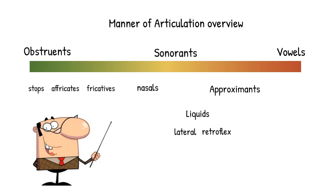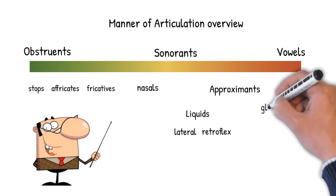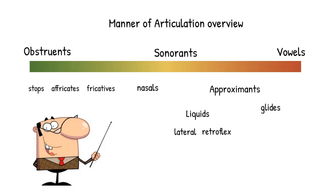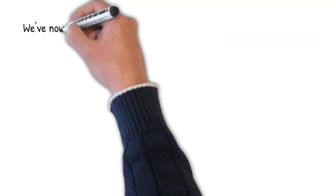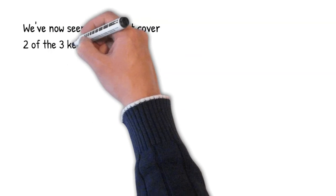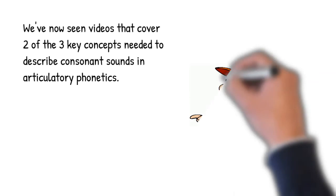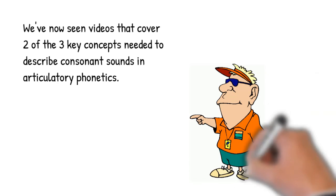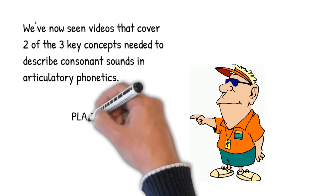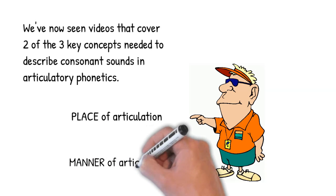Finally, within the group of approximants, we learned one more manner term, glide. Okay, we've now seen videos that cover two of the three key concepts needed to describe consonant sounds in articulatory phonetics. Specifically, we're talking about place and manner of articulation.